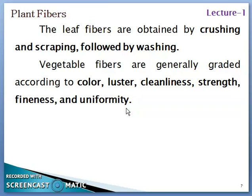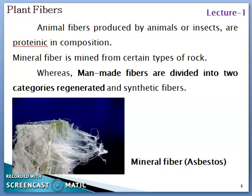Vegetable fibers are generally graded according to color, luster, cleanliness, strength, fineness, and uniformity. Animal fibers produced by animals or insects are proteinic in composition, whereas plant fibers are cellulosic in composition. Mineral fibers are mainly mined from certain types of rocks such as asbestos, as shown in the figure. Man-made fibers are divided into two types: regenerated fibers and synthetic fibers, such as rayon and nylon.